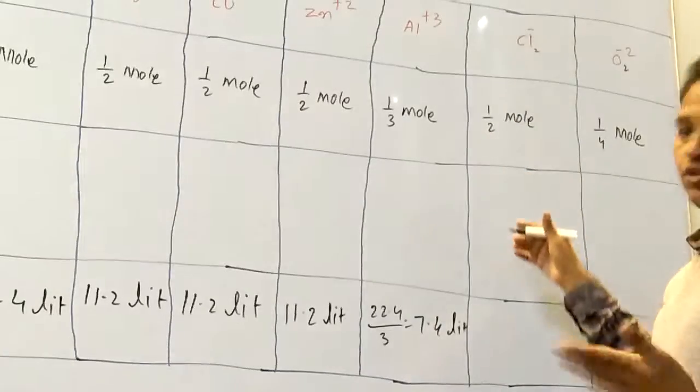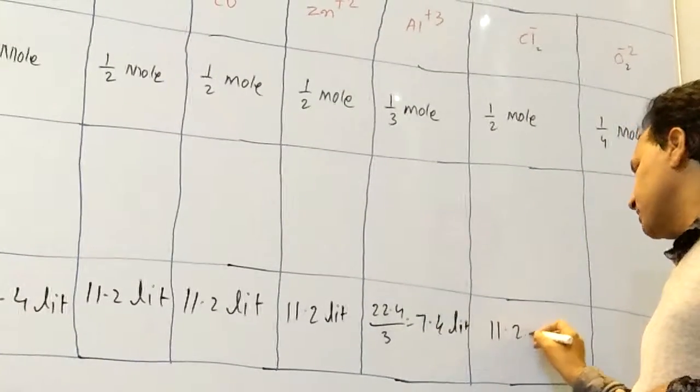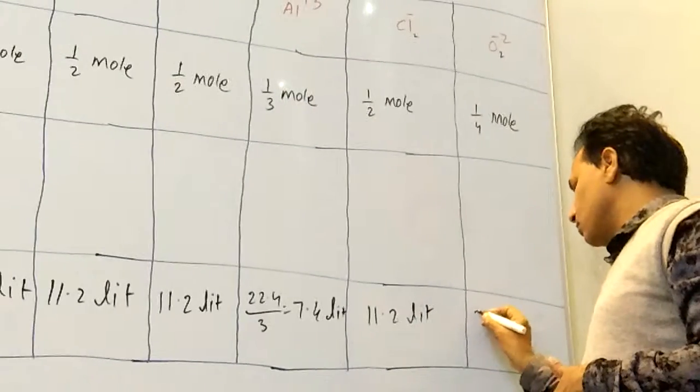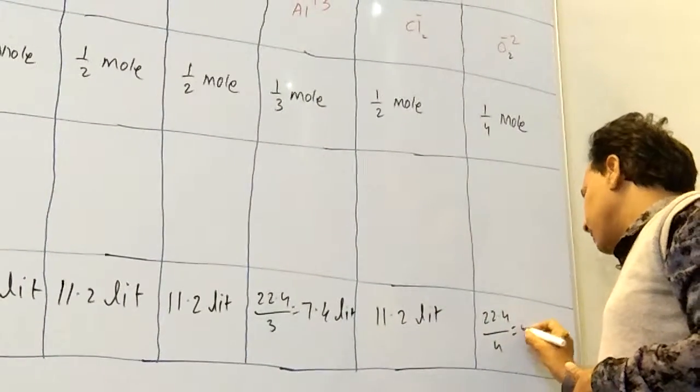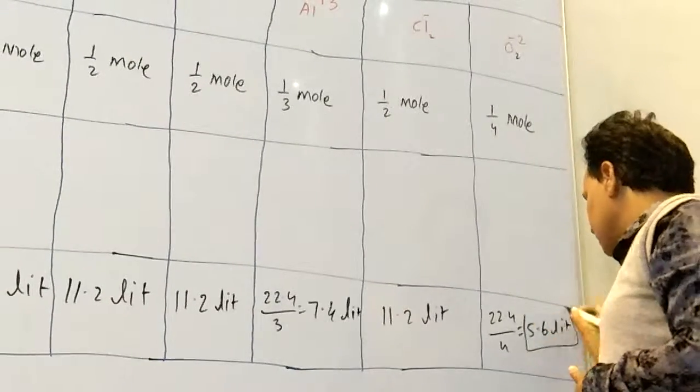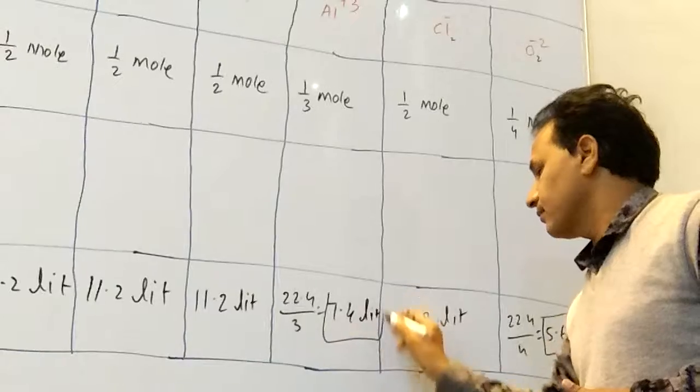Here, one by two, one by two means 11.2 liter. Here, one by four. One by four means 22.4 by 4, that is 5.6 liter. This is the measurement.